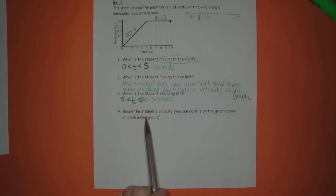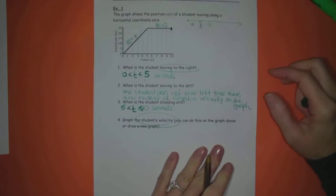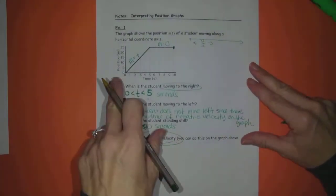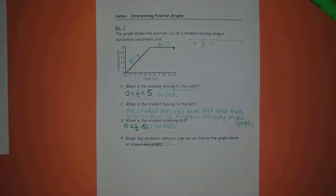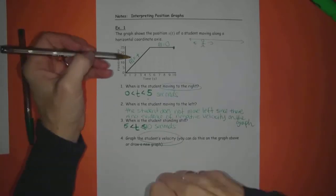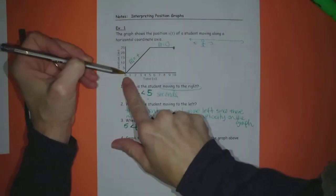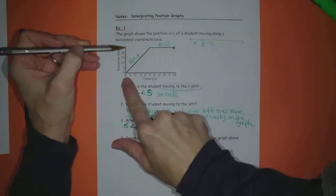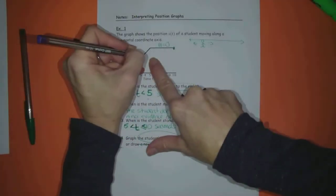Last question here. Graph the student's velocity. You can do this on the graph above or draw a new graph. I think we could probably do it up here. If I graph the velocity, I have to graph something that represents the slopes of the tangents here. And since there's just two line segments, this shouldn't be too terribly difficult. I would like to pick maybe a color that pops out a little bit more though. So I had said that the slope here was positive, but let's get the actual reading. So the slope of this line, it looks like I'm going up 25 and over 5. So I'm going to say the slope is positive 5.